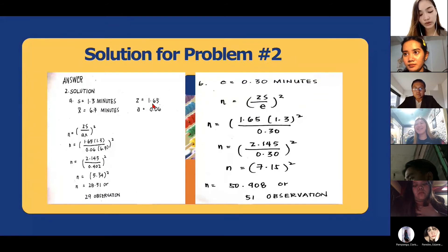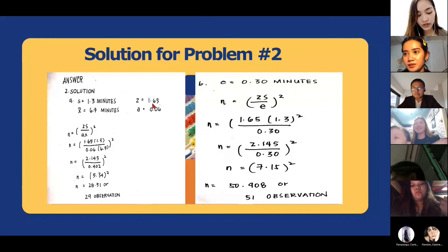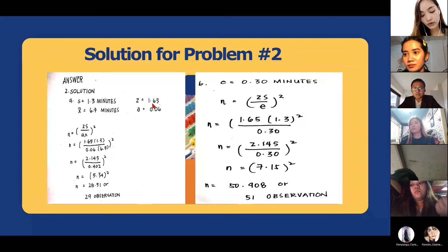So the formula we use is N equals Zs over Ax squared. So N equals 1.65 times 1.3 over 0.06 times 6.7 squared. So 1.65 times 1.3 equals 2.145. The next one is 0.06 times 6.7 equals 0.402. So N equals 2.145 over 0.402 squared. So N equals 5.34 squared.